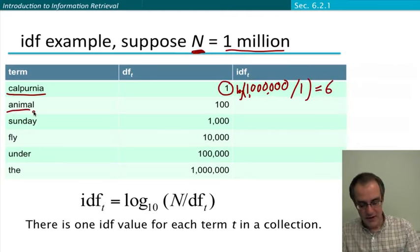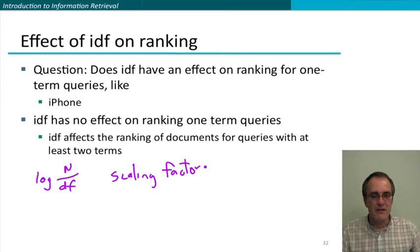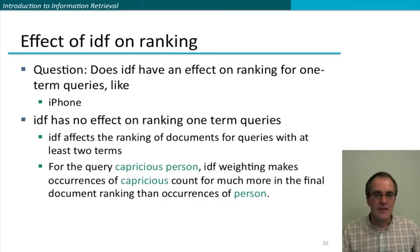Okay, here's a yes-no question for you. Does the IDF have an effect on ranking for one term queries like this one? The answer is no, it doesn't. IDF has no effect on one term queries. So for a one term query, you're going to have one of these terms of N over the document frequency, and it will be worked out. But it's going to be just a scaling factor, which since there's only one IDF value for each term, will be applied to every document, and therefore it won't affect the ranking in any way.